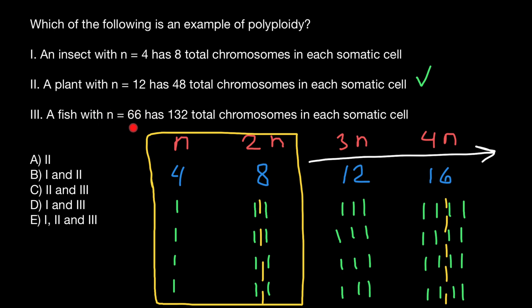And let's take a look at the variant 3. A fish with n equals 66 has 132 total chromosomes in each somatic cell. So 66 times 2 is going to be 132. This fish has many chromosomes in its gametes, 66, but its somatic cells has just double number, which is diploid. So it is not polyploid. It belongs to this group of the diploid organism. So it's not going to be polyploid.